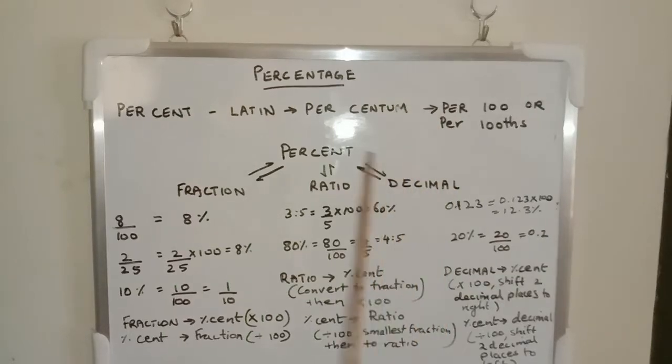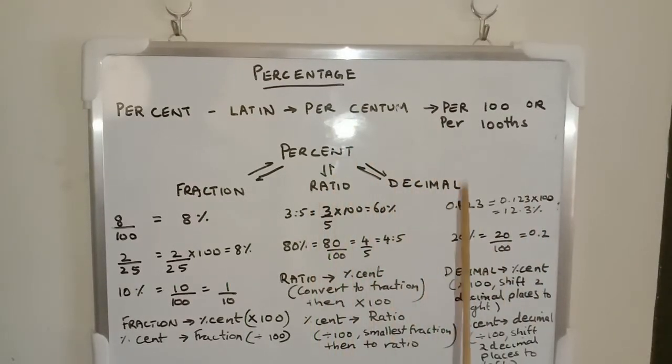Next one is decimal. For decimal to percent, you have to shift two decimal places to the right side.